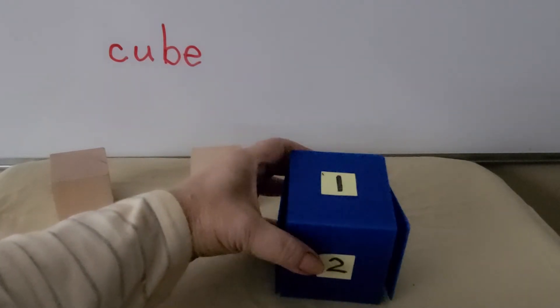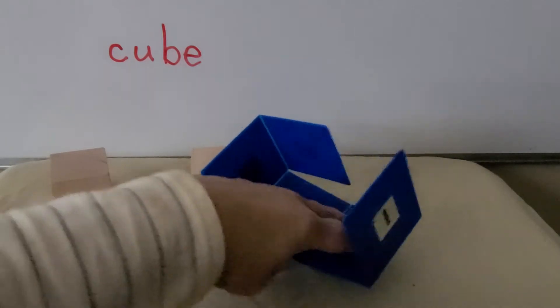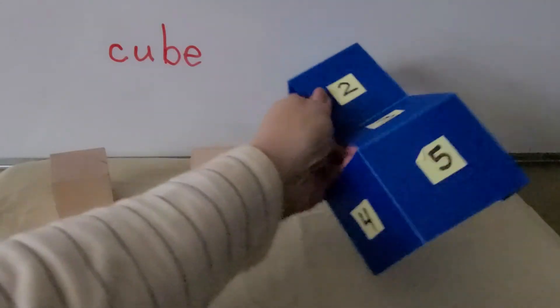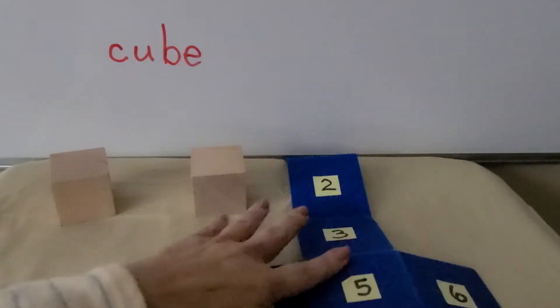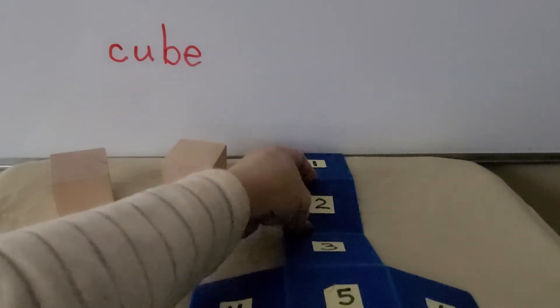If we unfold a cube and open it up, we can see all of its sides. We can open up a cube and see all of its sides, and we can count them.